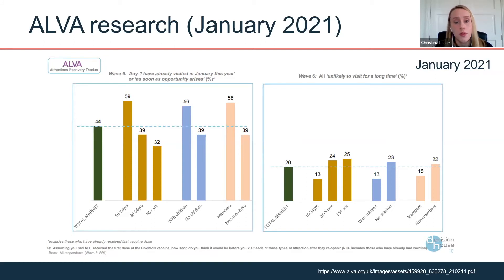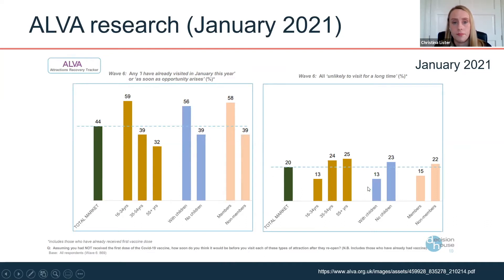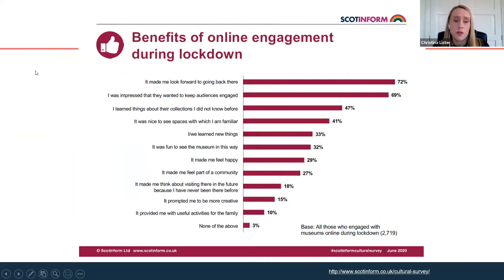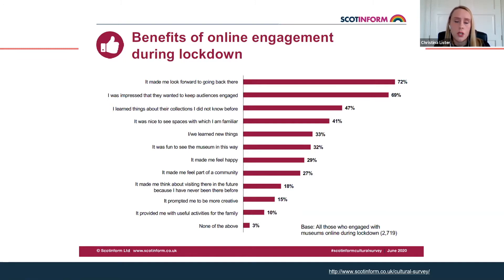ALVA's research found that the groups most likely to return soonest last year were younger people — 16 to 34 year olds — groups with children, and members of organisations. There's also some really interesting research from Scotland on the benefits of online engagement during lockdown. People who engaged with museums online during lockdown were asked what the benefits were for them — useful research if you don't have that data yourself.